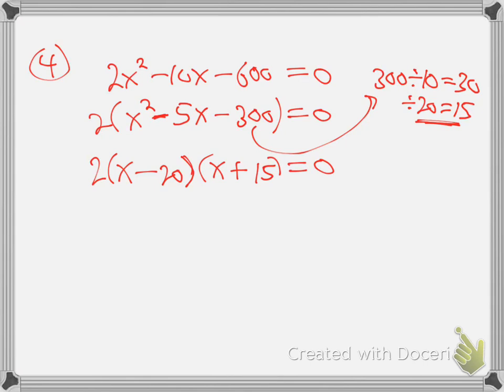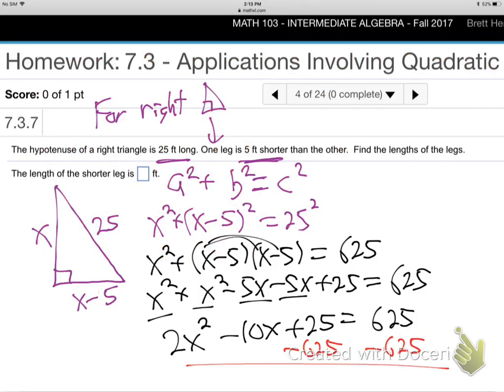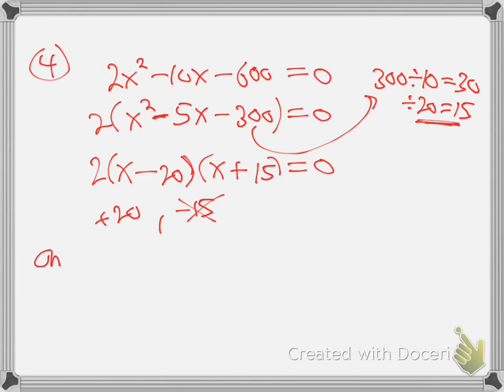The answers are positive 20 or negative 15. Throw away the negative answer — can't have a negative length for a real-life shape. So X is 20. Go back to the words: one leg is five shorter, so the other leg is 20 minus 5 equals 15. The legs are 20 and 15. Done.